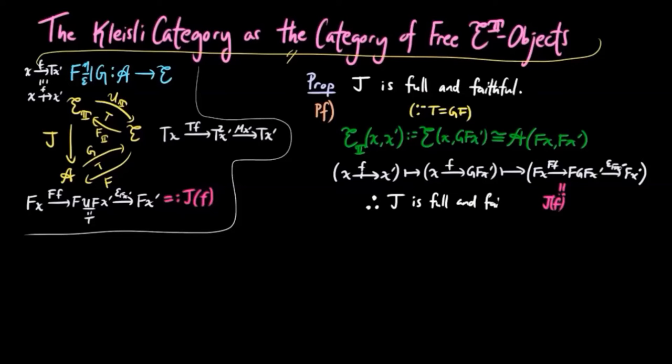Therefore, j is full and faithful. As a corollary, we have the Kleisli category is equivalent to the category of free Eilenberg-Moore objects.